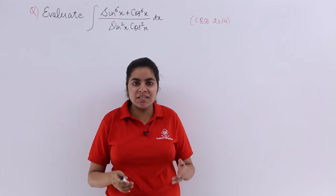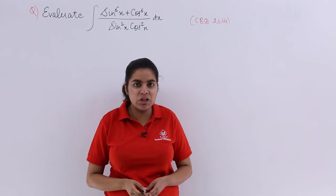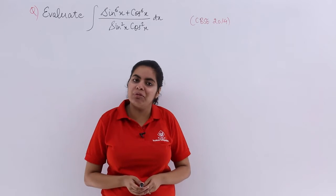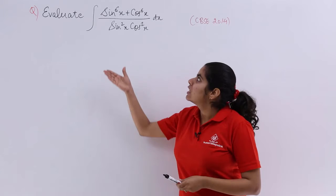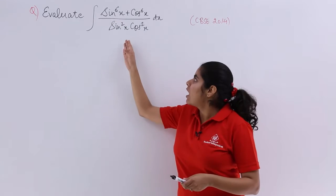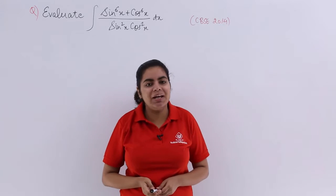Let's see a problem which has been asked in the CBSC previous year board examination. The year in which it was asked was 2014 and the problem is: evaluate integral of sin raised to the power 6x plus cos raised to the power 6x upon sin square x multiplied by cos square x.